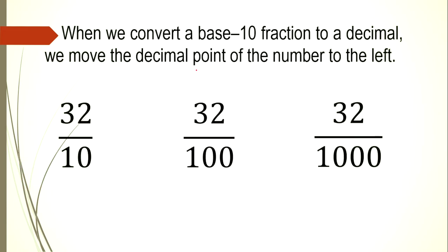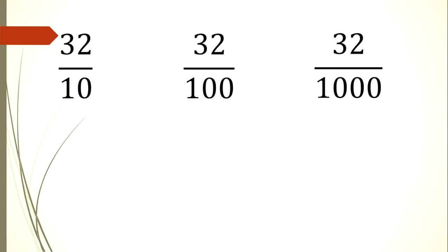When we convert a base-10 fraction to a decimal, we move the decimal point of the number to the left. For example, 32/10, 32/100, and 32/1000 — these denominators are all base 10 or multiples of 10. For a whole number, the decimal point is on the right side. For 32/10, we move one place to the left — since there is only one zero — giving us 3.2.